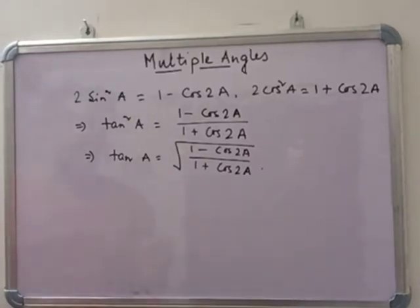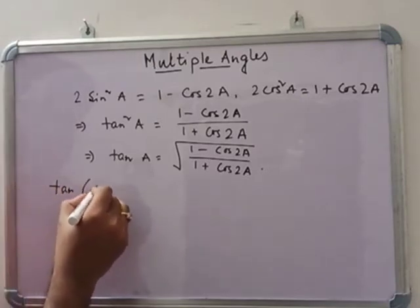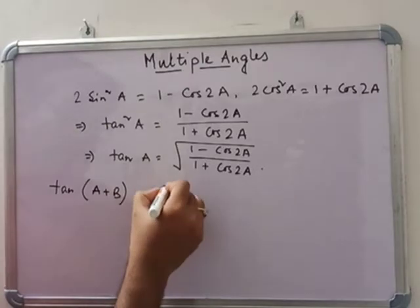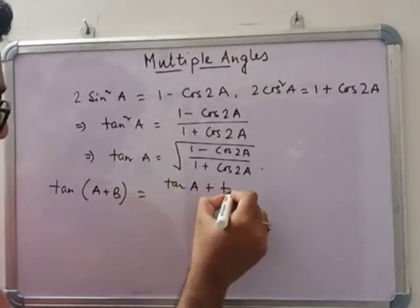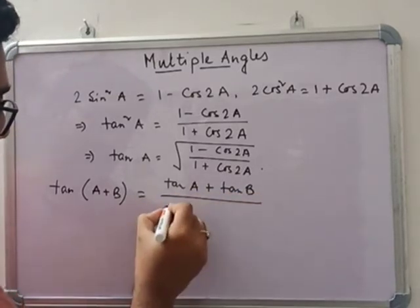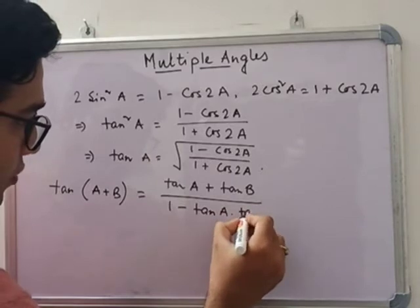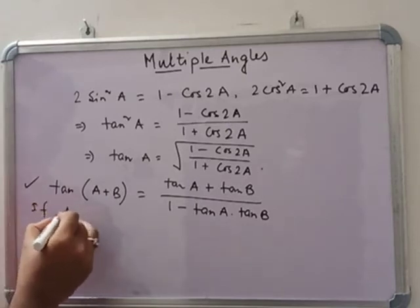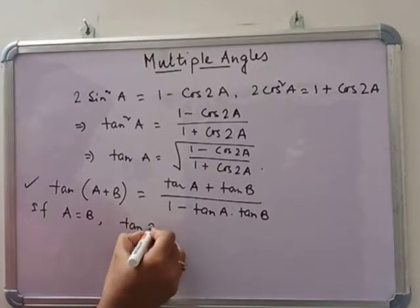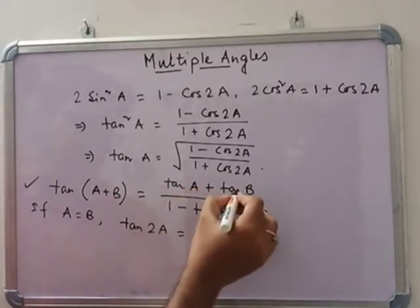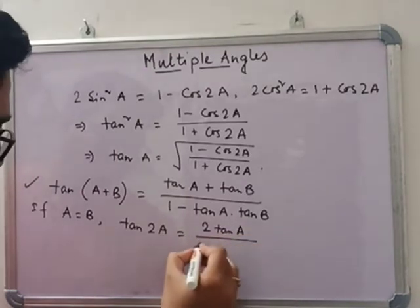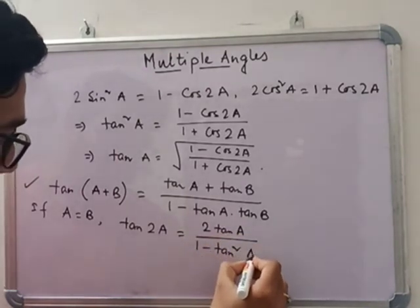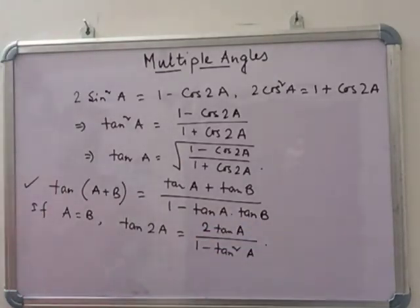For the tan formula, we know tan(A + B) = (tan A + tan B) / (1 − tan A · tan B). If A equals B, then tan(A + A) = tan 2A = (tan A + tan A) / (1 − tan²A) = 2 tan A / (1 − tan²A).